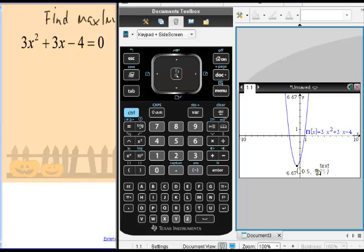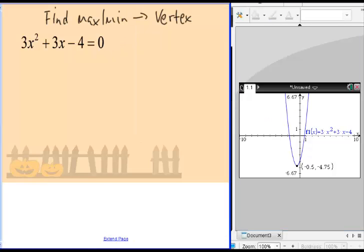Once you've done that, it will tell you what your minimum value is, and that's your vertex as well. Our minimum value is negative 0.5 and negative 4.75.